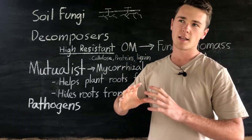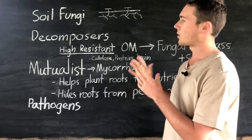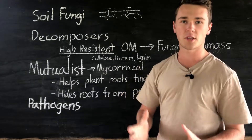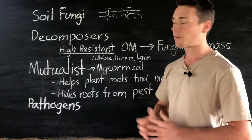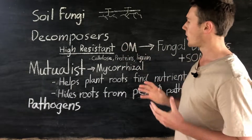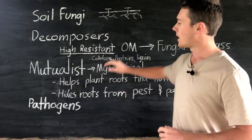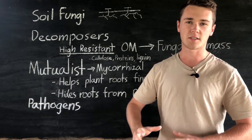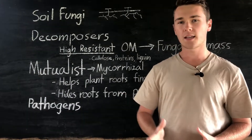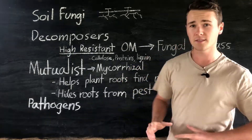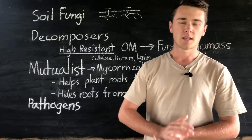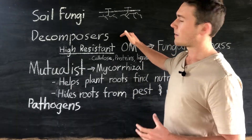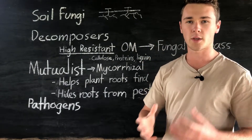Fungi can mostly be separated into three groups. First are the decomposers. This is a really important function — fungi break up highly resistant organic matter including cellulose, protein, and lignin, all of which have a high resistance to decomposition. Bacteria don't really break down these types of compounds; they stick to simpler structured compounds. That's why fungi are really important in the breakdown of organic matter.